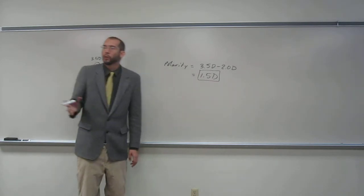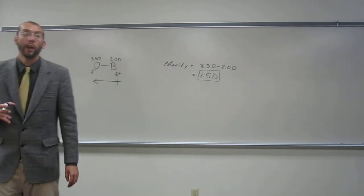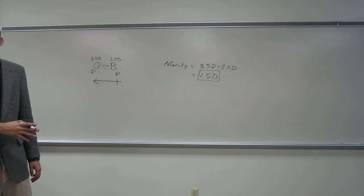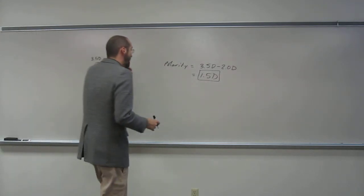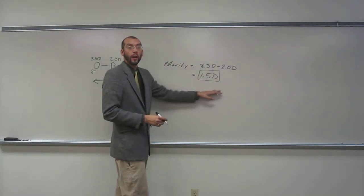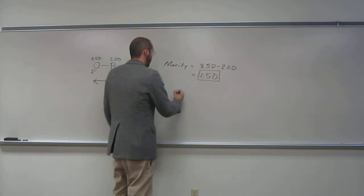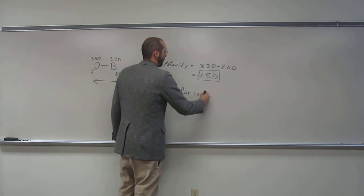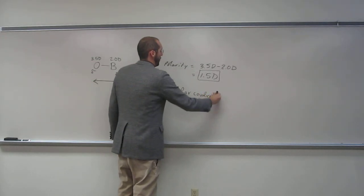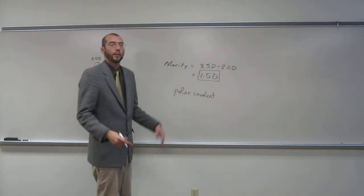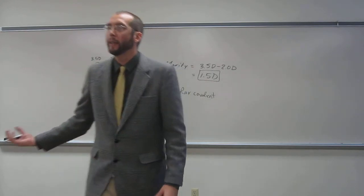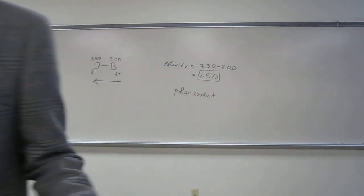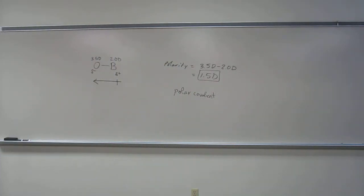So nonpolar starts at like 0.4 debyes, nonpolar, 0.4 and down. So this is getting closer to ionic bonds, but this is polar covalent. And polar just means to have a negative and a positive portion of that entity, in this case, the bond. Any questions on that one?